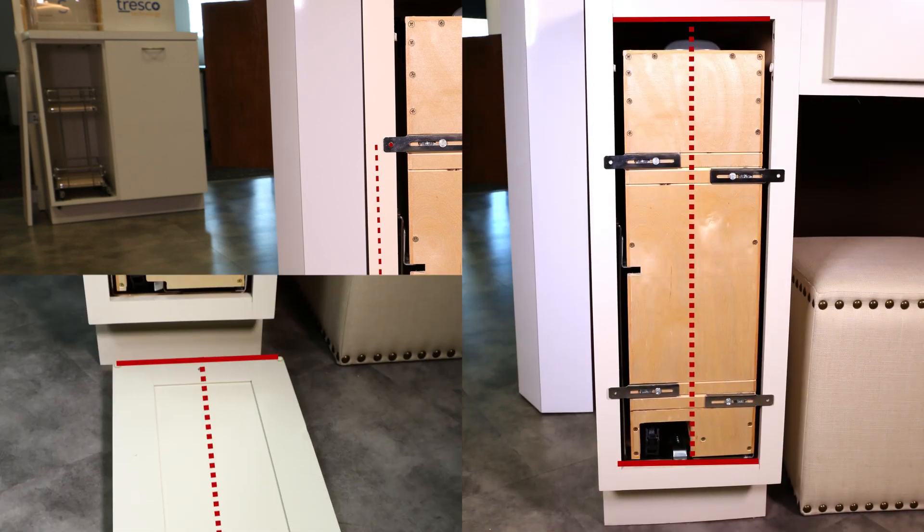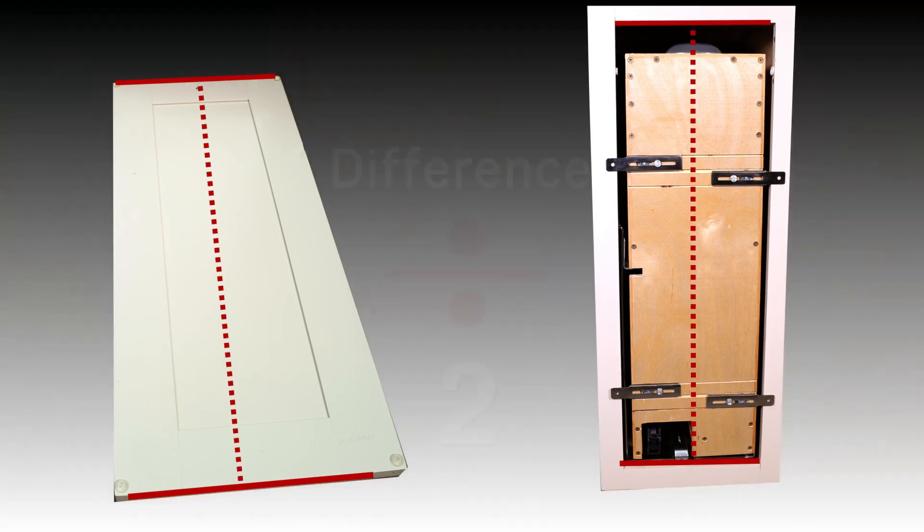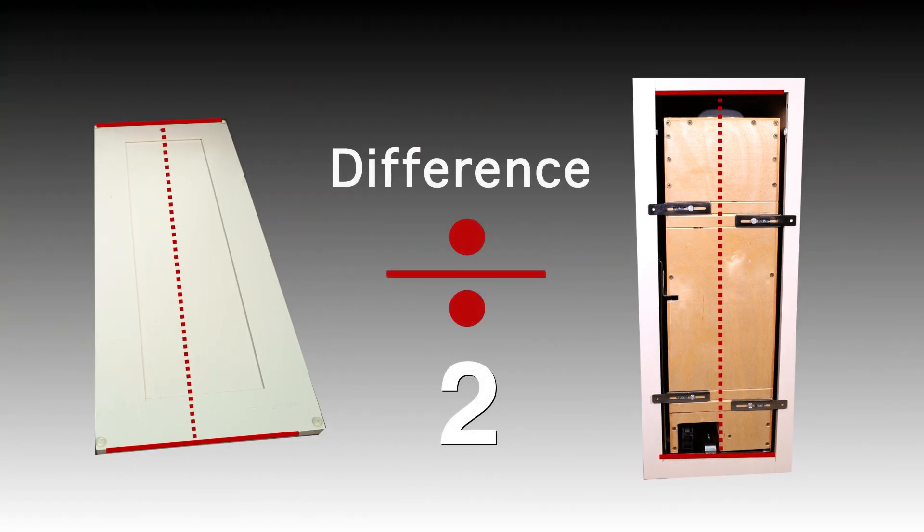Next, measure the cabinet opening and then measure the door size. Take the difference of these two numbers and divide by 2. This number is the door overlay or inset gap.